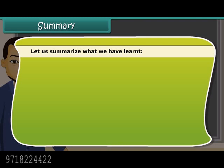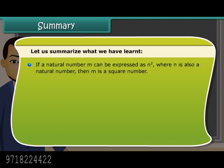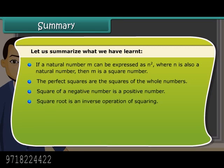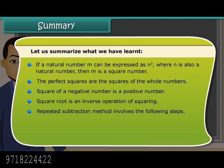Let us summarize what we have learned. If a natural number M can be expressed as N², where N is also a natural number, then M is a square number. The perfect squares are the squares of the whole numbers. The square of a negative number is a positive number. Square root is an inverse operation of squaring.